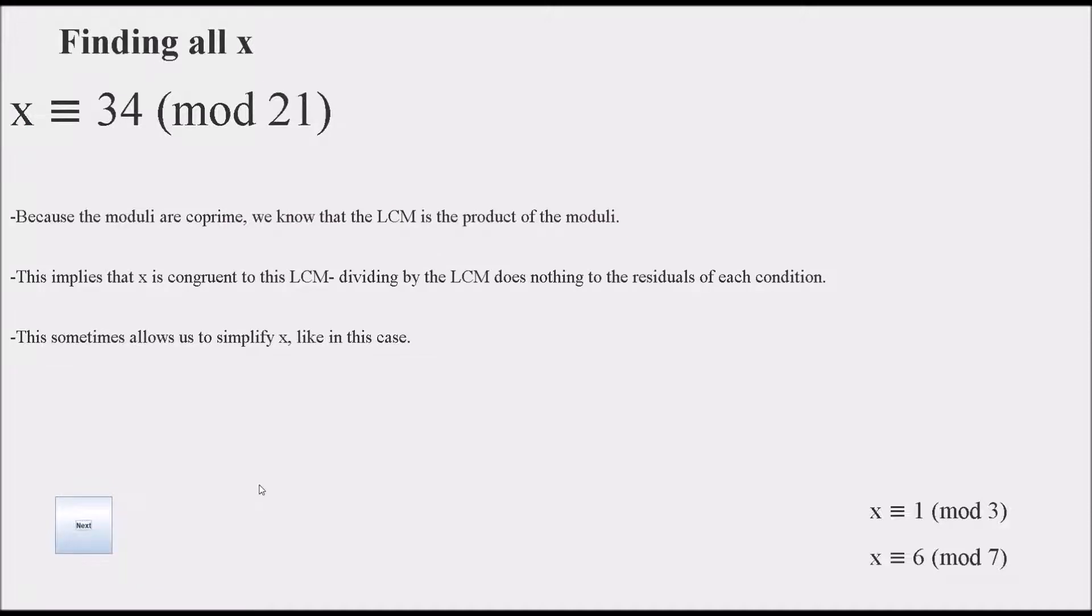Moving on. So to find all x, the Chinese remainder theorem states that the modulus of x is going to be the product of all of the moduli for the conditions. This is because the least common multiple is the product of the moduli by definition because we knew that they were coprime. Sometimes this allows us to simplify x, like in this case. So 34 mod 21 is also 13 mod 21. If we check that, we see that it still holds true.